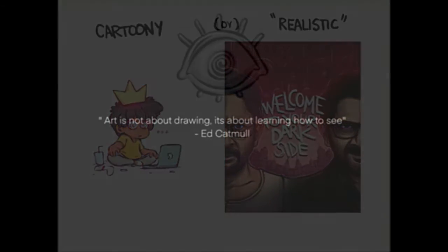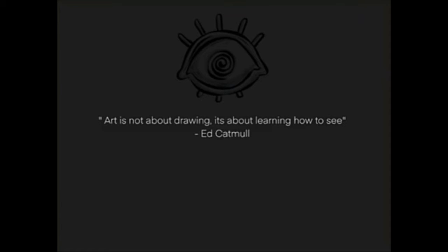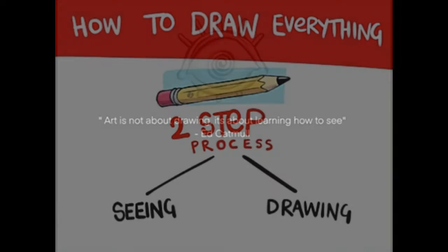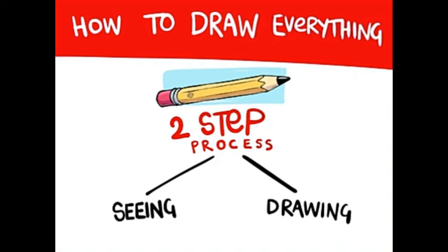There is a quote by the CEO of Pixar, Ed Catmull: 'Art is not about drawing, it's about learning how to see.' So drawing has two properties: one is seeing, and the other one is catching—anything that you do with paper and pencil.